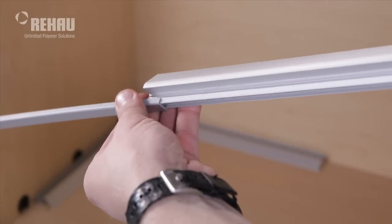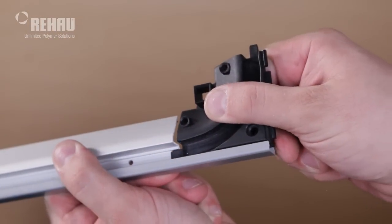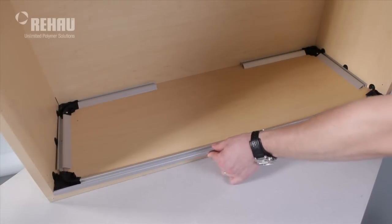Slide the track cover on the track base. On each side, connect the 90 degree corner piece. Align and fasten the track with screws.